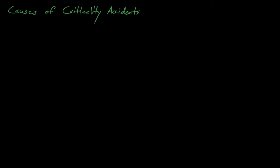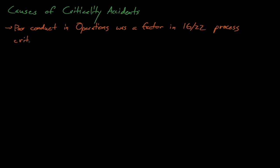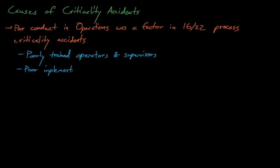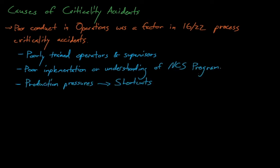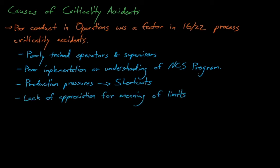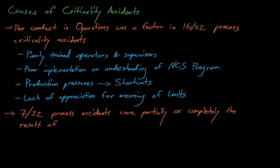If we look at all 22 historical process nuclear criticality accidents, we notice that in a large majority of these accidents — 16 out of 22 — poor conduct by operations staff was a factor. This poor conduct includes poorly trained operators and supervisors, a poor understanding or poor implementation of the site's nuclear criticality safety program, production pressures leading to dangerous shortcuts, and a lack of appreciation for the meaning of safe limits. In fact, 7 out of these 22 criticality accidents were either partially or completely caused by poorly designed criticality safety limits.